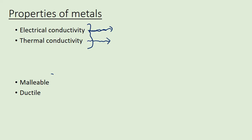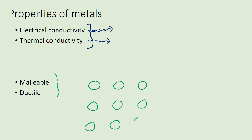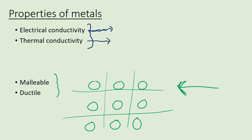For malleable and ductile we can use the same theory to explain both properties because they are very similar. Malleable means it can be rolled or bent into sheets — we can change its shape. Ductile means it can be drawn into thin wires. The reason behind both is the regular pattern of the structure — you can see it as layers. If you apply a force, or hit it with a hammer, the layers can slide over each other, enabling you to change the shape or draw it out into thin wires.